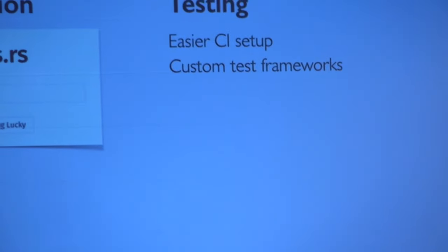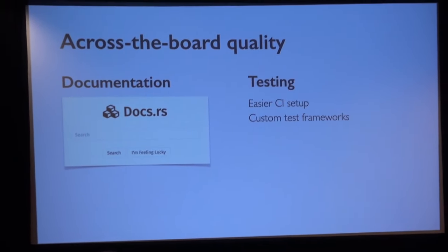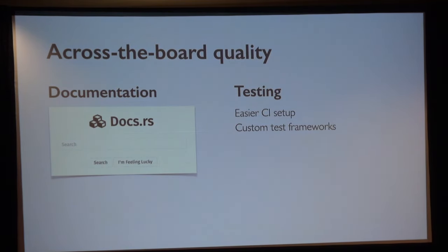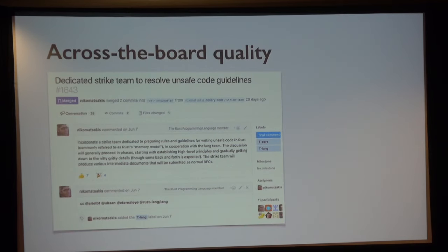What about quality? There are some steps we can take to improve quality across the board. You may have seen the DocsRS website that automatically provides documentation in a central place for everything on crates.io — this has been amazing for the ecosystem. But there's more work we can do to improve the documentation experience. Another thing we can do is make it easier for projects to set up CI, for example as part of cargo new, or provide more elaborate testing frameworks. Right now we have some built-in testing and benchmarking in Cargo, but it's unstable and you can't actually build out new testing frameworks — we'd like to improve that. And we're looking at efforts to figure out how best to write unsafe code, which is crucial for lower-level libraries that are the foundations of the ecosystem.